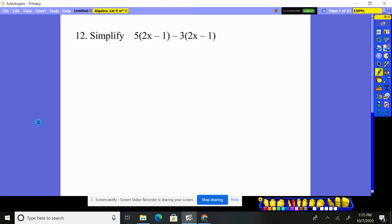The next problem. Distribute through. Again, that'll be 10x. 5 times 1 is minus 5. And notice this is a negative 3 distributed through. Negative 3 times a 2x is negative 6x. And here's where it's tricky. Negative 3 times the negative 1. What's a negative times negative? Positive.